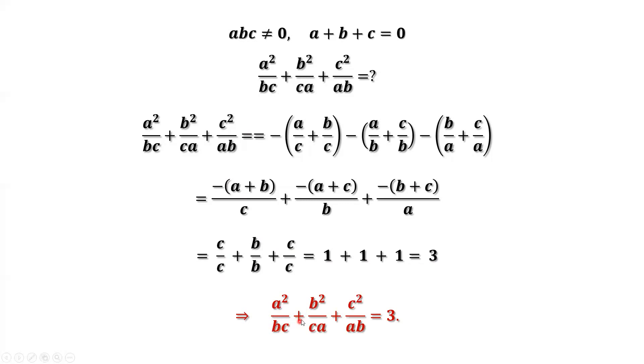A squared over BC plus B squared over CA plus C squared over AB equals three.